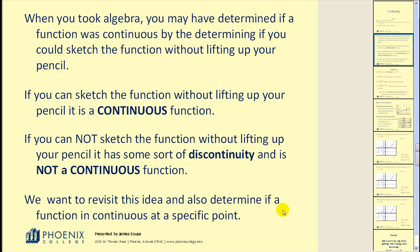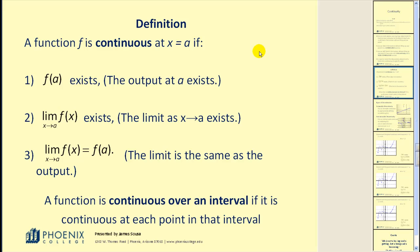We want to revisit this idea and also determine if a function is continuous at a specific point. Let's take a look at a definition of continuity involving limits. A function f is continuous at x equals a if it satisfies these three conditions. First, f of a exists.